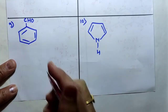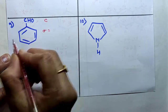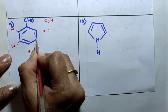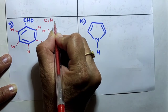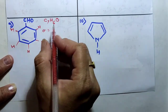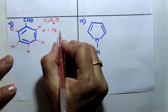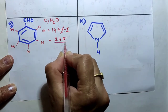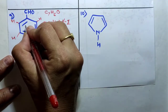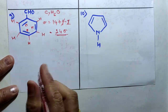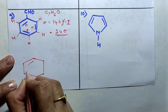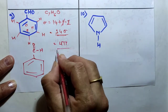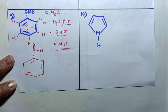Next compound: benzaldehyde. Calculating sigma bonds — total atoms: carbon = 7 (C7), hydrogen = 6 (H6), oxygen = 1 (O1), giving C7H6O. Total number of atoms = 14. Plus number of rings = 1, minus 1 — they cancel. Therefore 14 sigma bonds. For pi bonds: the benzene ring has 3 double bonds, and benzaldehyde also contains a C=O double bond, giving 4 double bonds total. Therefore 4 pi bonds — 14 sigma bonds and 4 pi bonds in benzaldehyde.